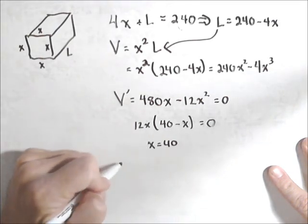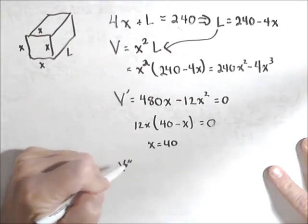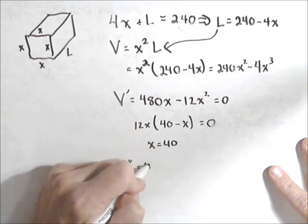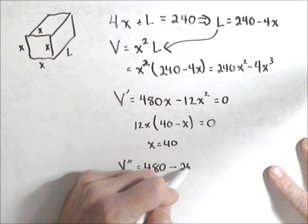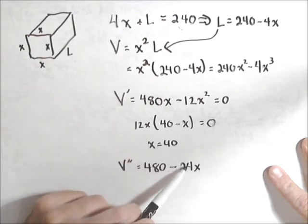Now we do want to check and make sure this is a maximum. So we're going to use the second derivative for that. Second derivative is 480 minus 24x. And what you do is you plug in the 40.